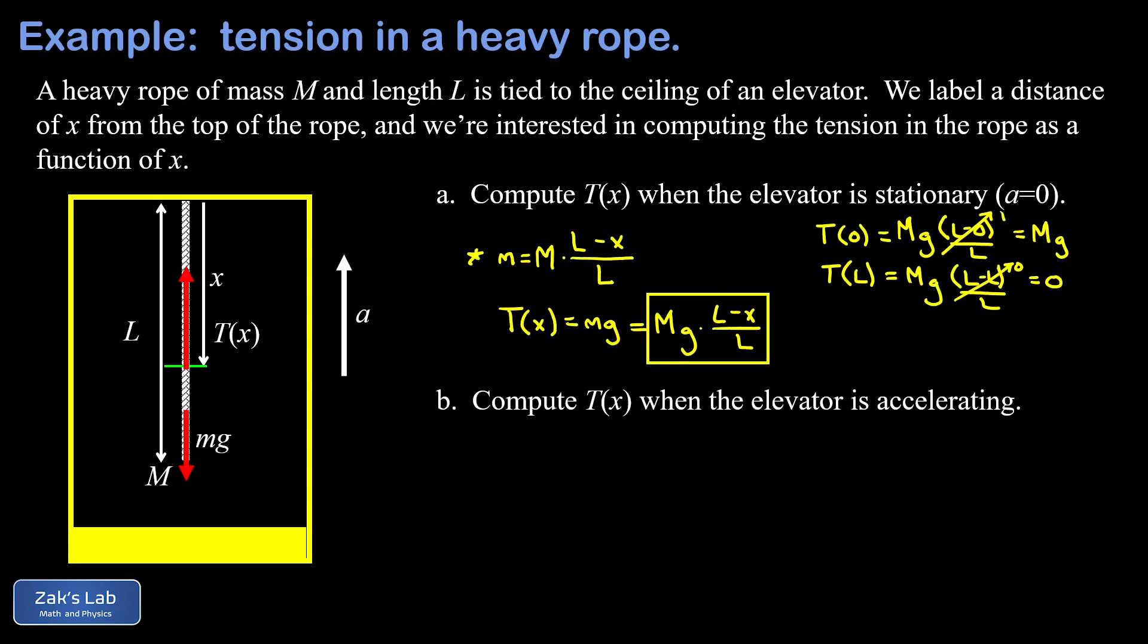Next, we look at the case where the elevator is accelerating upward. And we've already made a small adjustment to the force diagram. If you look closely, t of x is now a longer vector than little mg. And this is because there must be a net upward force in order for our little section of rope to accelerate upward.